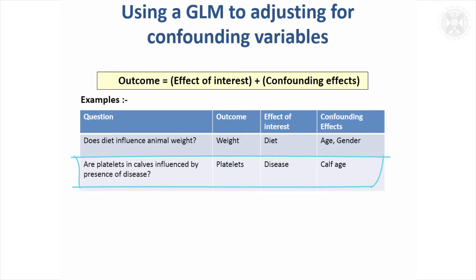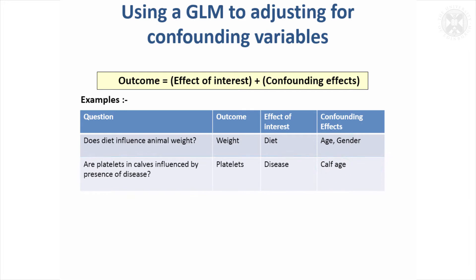The next situation might be where you're analysing a measurement — from the example in the last session — measuring platelets on some newborn calves, where some of the calves have a disease and platelet values differ. But platelets are also affected by the age of the calves, so what you can do in the model is adjust for calf age, so you avoid any biases in the measurements of disease that are due to age. That's another very useful thing to be able to do with general linear models.